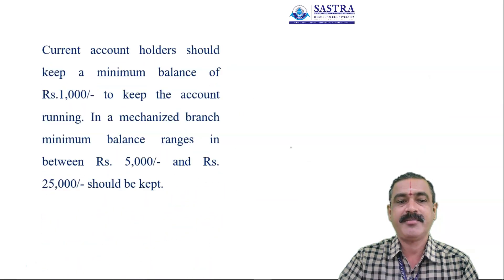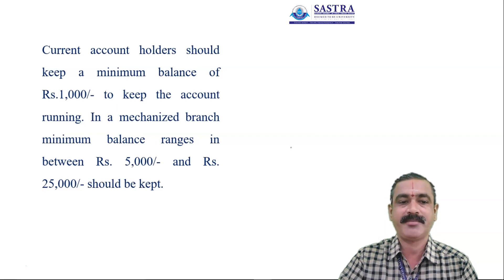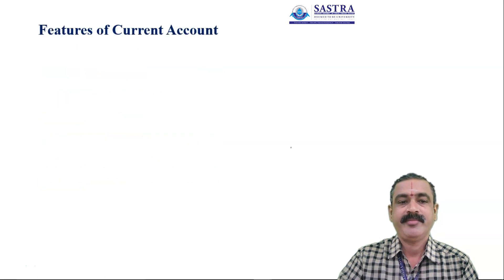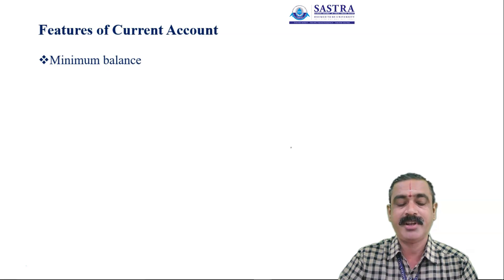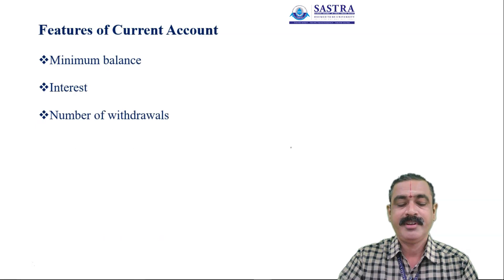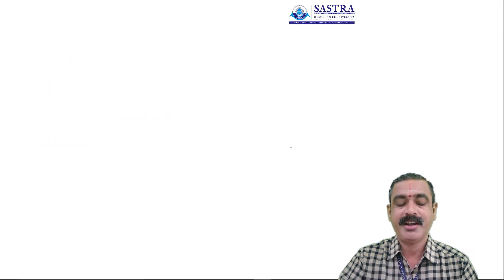There are different features of the current account. The current account holders should keep a minimum balance of Rs. 1000 to keep the account running. In a mechanized branch, the minimum balance ranges between Rs. 5000 and Rs. 25,000. Normally, the minimum balance is Rs. 500 in rural and semi-urban areas and Rs. 1000 in urban areas and metros. This account is not eligible for interest. There is no ceiling on the number of withdrawals and credits. Passbook, pass sheet, standing instructions, and cheque collection facilities are available.